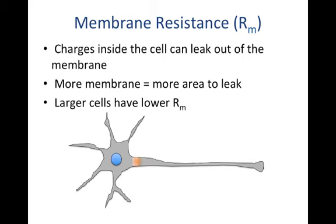Membrane resistance, or R sub M, is when charges inside the cell leak out of the membrane. An important concept is that with membrane resistance, the more membrane area you have, the more area there is for charges to leak. This means that larger cells have lower membrane resistance — charge is more likely to leak out of a larger cell than a smaller cell.